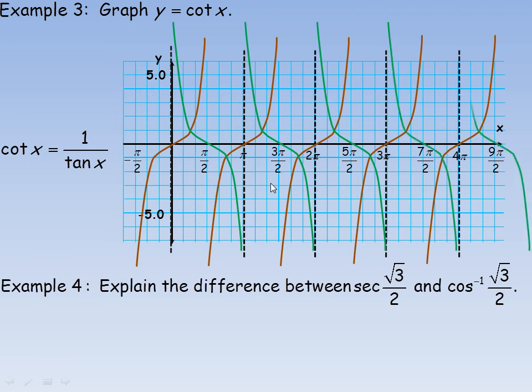That is what the cotangent function looks like, and of course there will be one more curve over here as well. It has the same shape as the tangent function, except the curves are reflected across the x-axis because of the reciprocal nature.